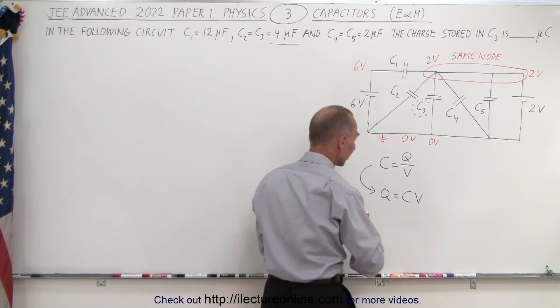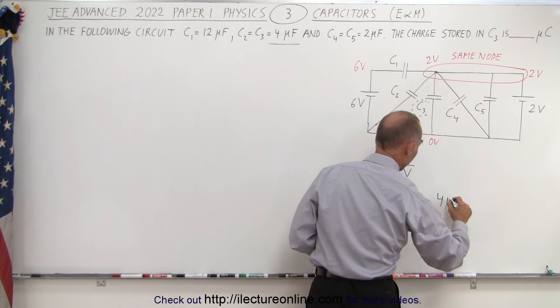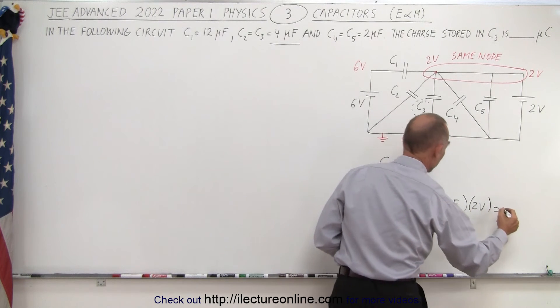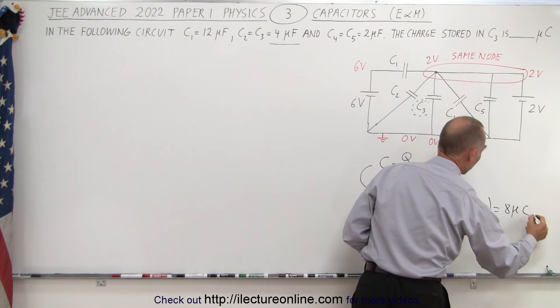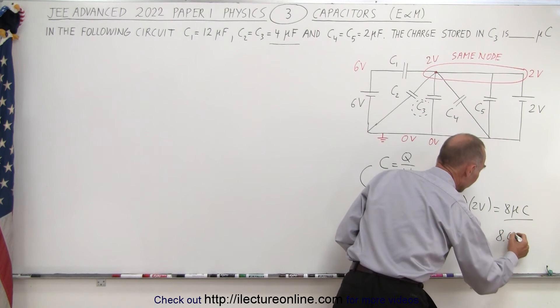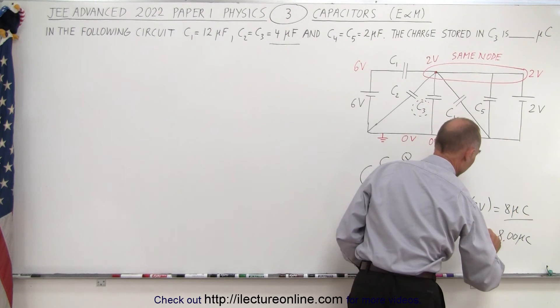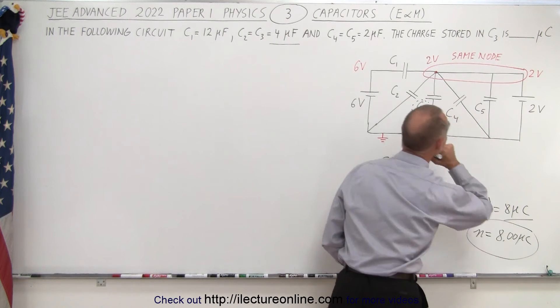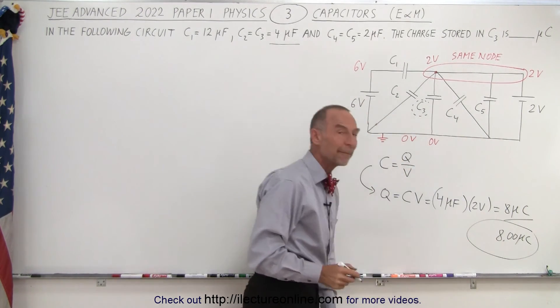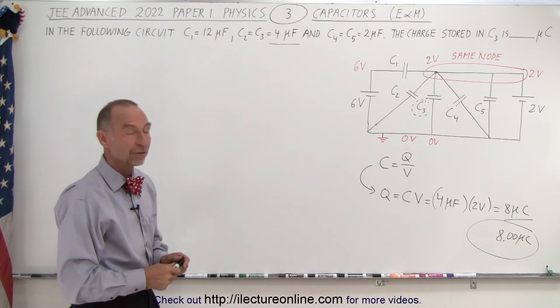And therefore, we can say that this is equal to 4 microfarads times 2 volts, and so this would be equal to 8 microcoulombs. Since we need two decimal places, we probably want to write this as 8.00 microcoulombs, and that is what the charge on capacitor 3 equals. So, 8 microcoulombs is the charge on capacitor 3.